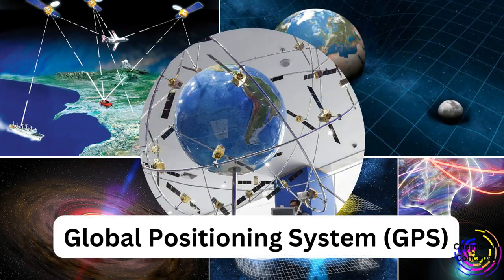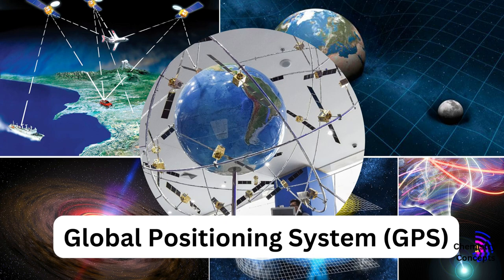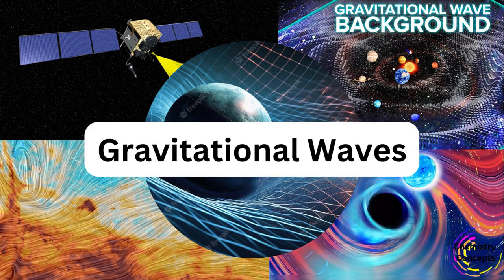One of the most significant real-life applications of general relativity is in the global positioning system. General relativity predicts the existence of gravitational waves, which are ripples in spacetime caused by the acceleration of massive objects, such as colliding black holes or neutron stars.